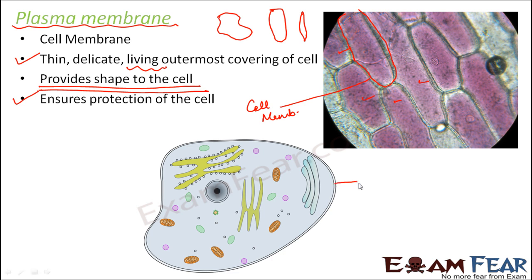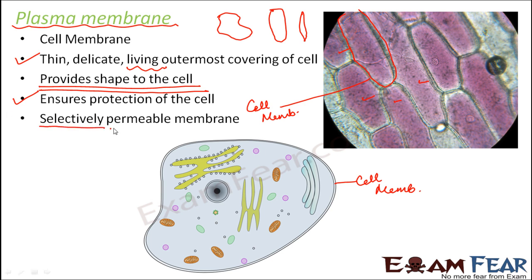In a plant cell, the cell membrane or plasma membrane is a selectively permeable membrane. Permeable means something which allows substances to pass through it. Selectively permeable means it is very selective — it allows certain particles to pass through but does not allow others. This is like security guards at your gate who allow your friends in but not strangers.